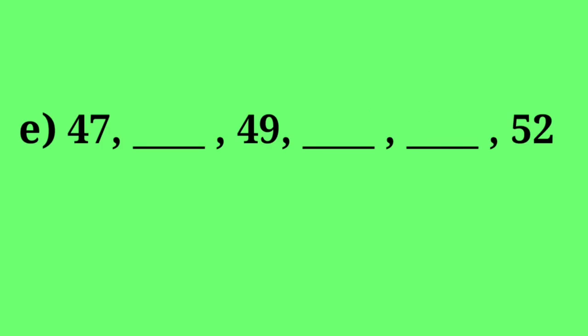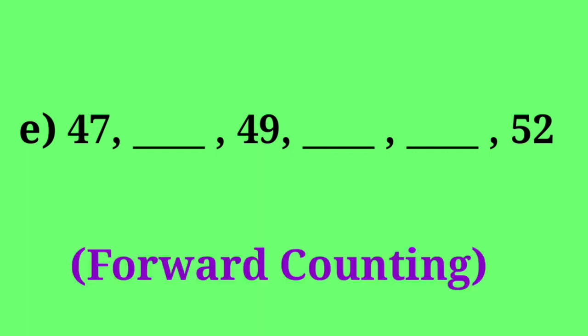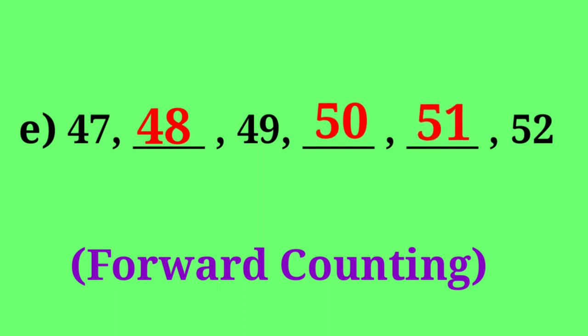See the last one: 47, dash, 49, dash, dash, 52. If you observe the series, it is forward counting. So write the forward counting numbers. 47 is already there, so after 47 is 48, then 49, 50, 51, 52. So this is forward counting.